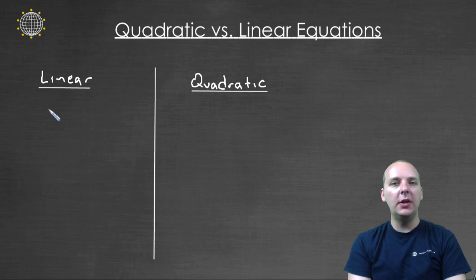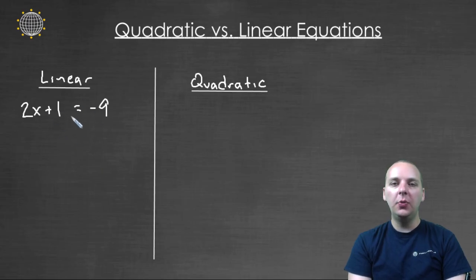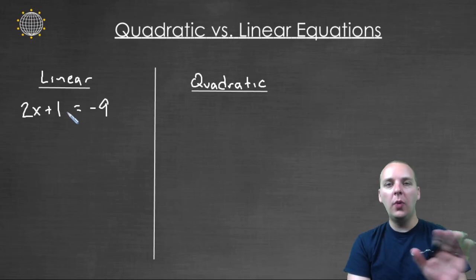If I had a linear equation like, let's say, 2x + 1 = -9, or something like that, this is something we're very good at solving. We know that we're supposed to isolate the x by moving everything away from the x, whether it be using subtraction or division or things like that.